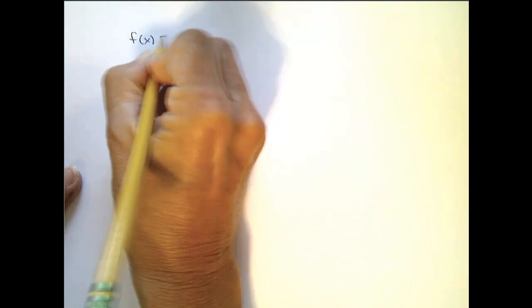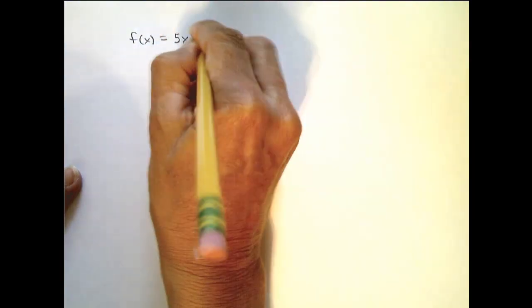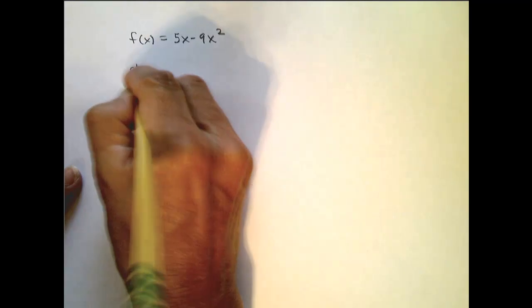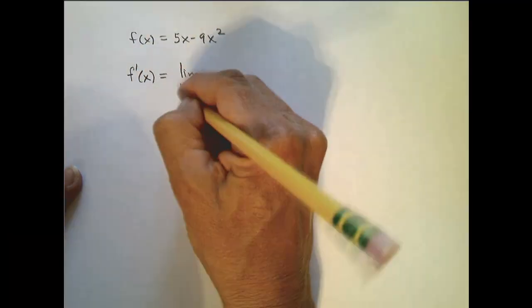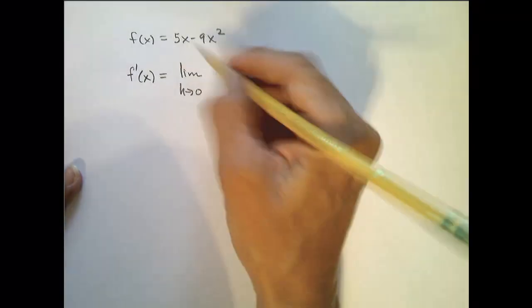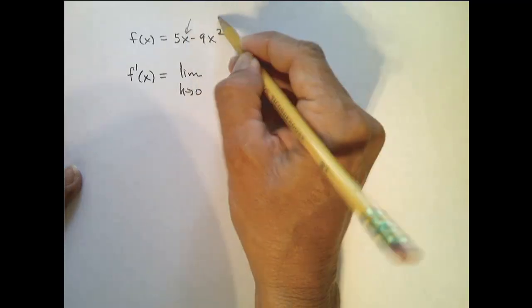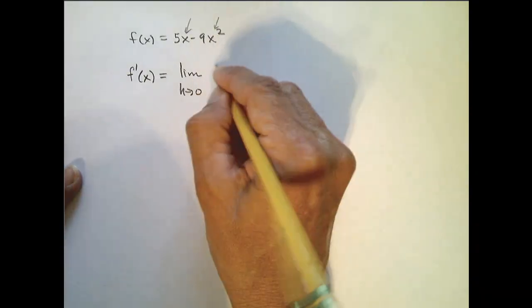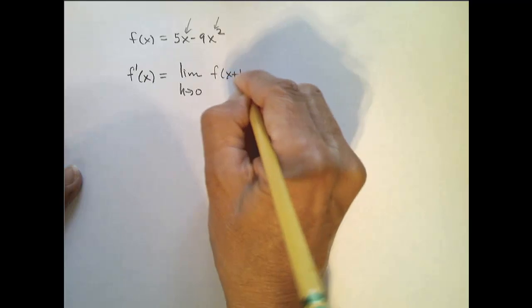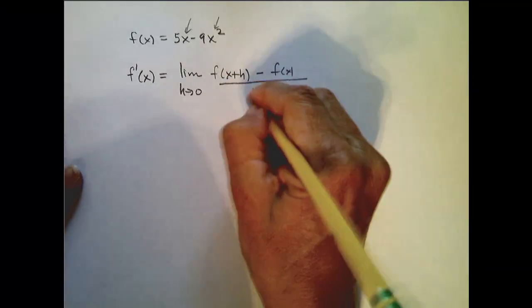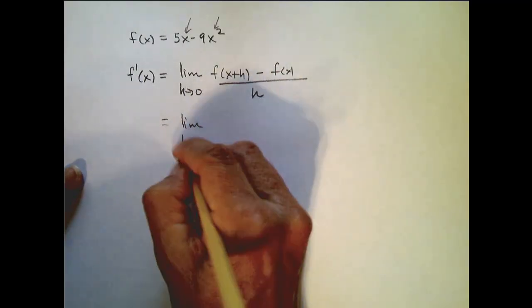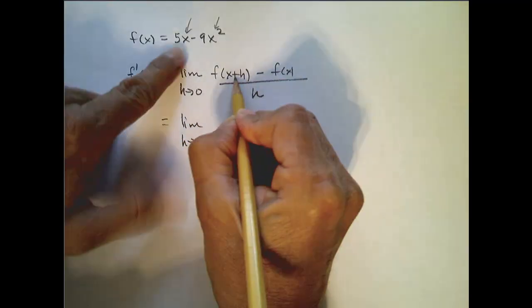So I'm going to rewrite my function up here: f of x equals 5x minus 9x squared. So recall f prime of x is the limit as h goes to 0 of, now I'm going to replace x plus h in for my x's. So let me write this down really quick, just so y'all see clearly what gets replaced where.